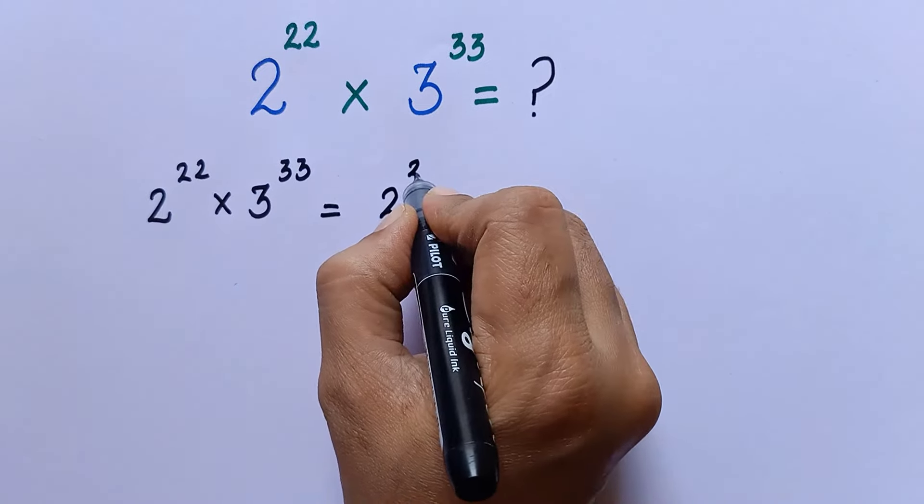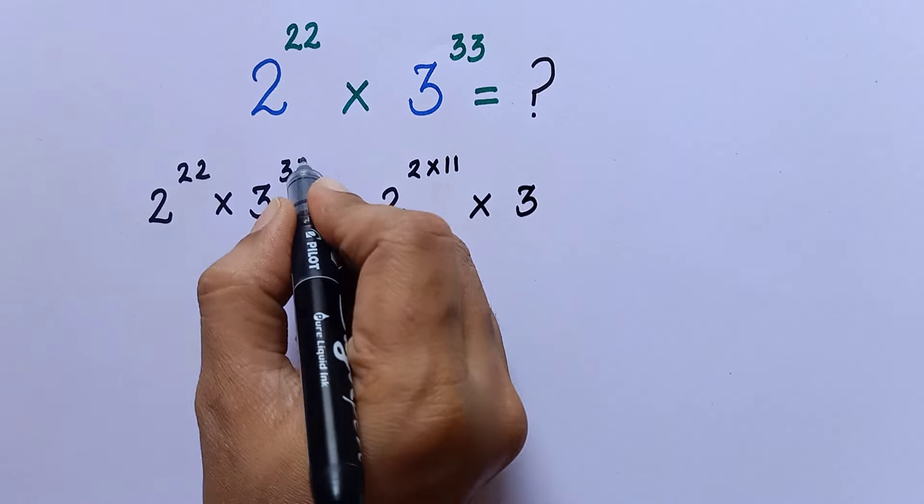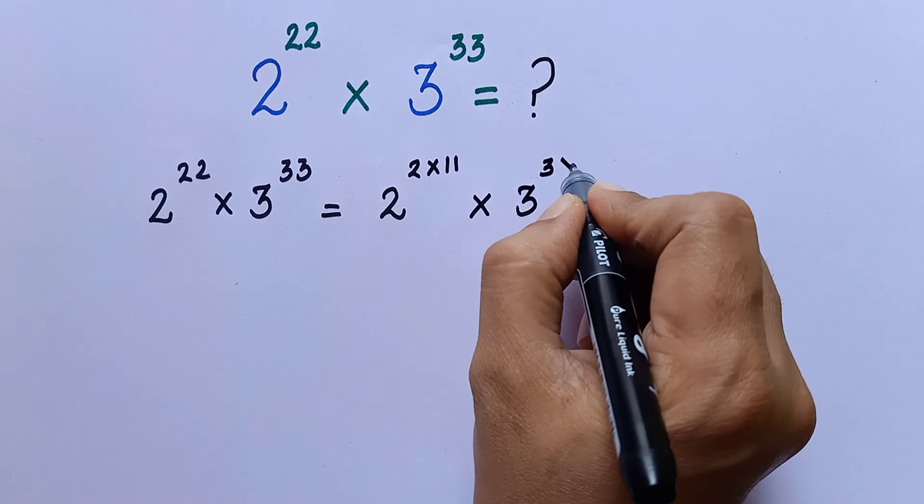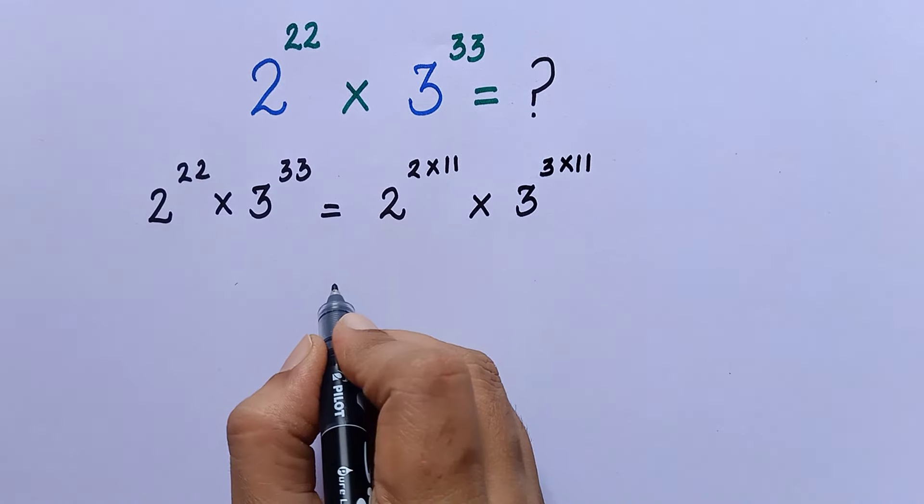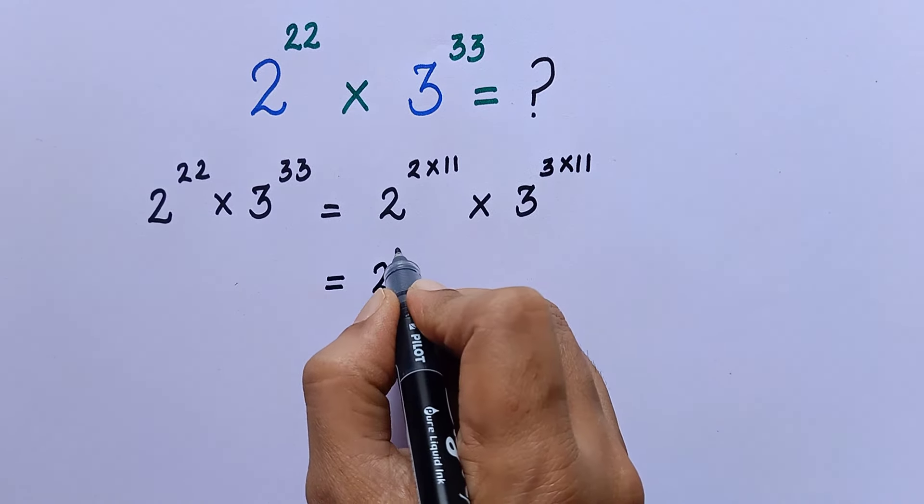So we can write 2 to the power of 22 as 2 to the power of 2 into 11, into 3 to the power of 3 into 11. With the help of the law of exponents, we can rewrite this as 2 square to the power of 11 into 3 cube whole to the power of 11.